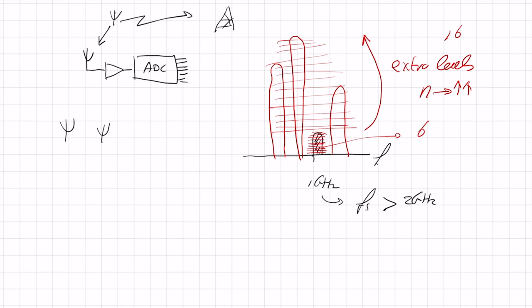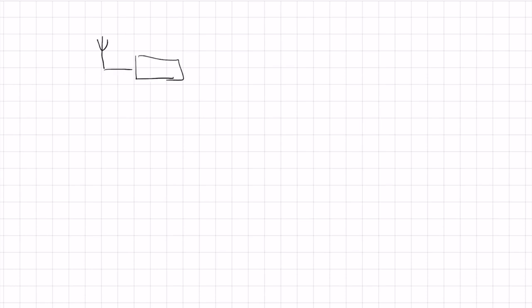With 16 bits and a 2 GHz sample rate, using the figure of merit I introduced, I end up with power on the order of 100 watts — a bit painful in your phone. So that's not a good idea. This is why we need to do something analog before we go to the analog-to-digital converter — we have to do some smart things to remove those unwanted interferers before the ADC.